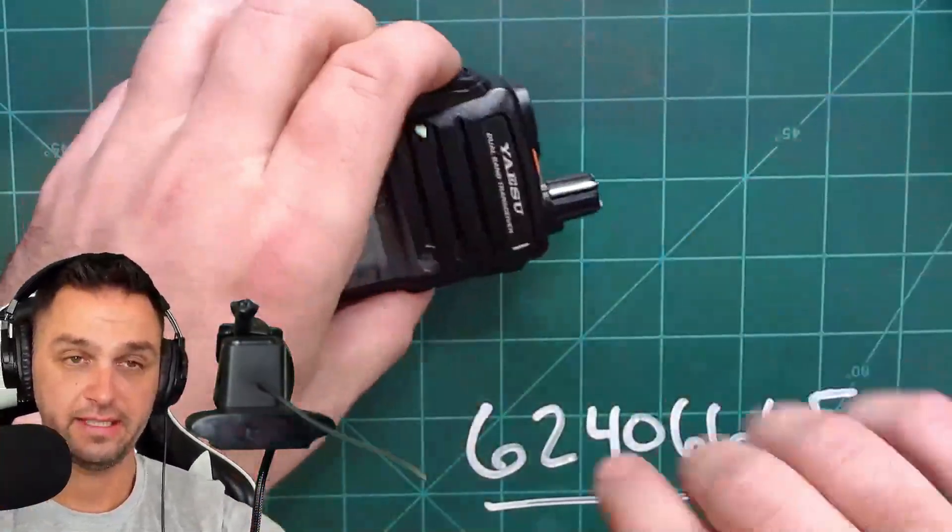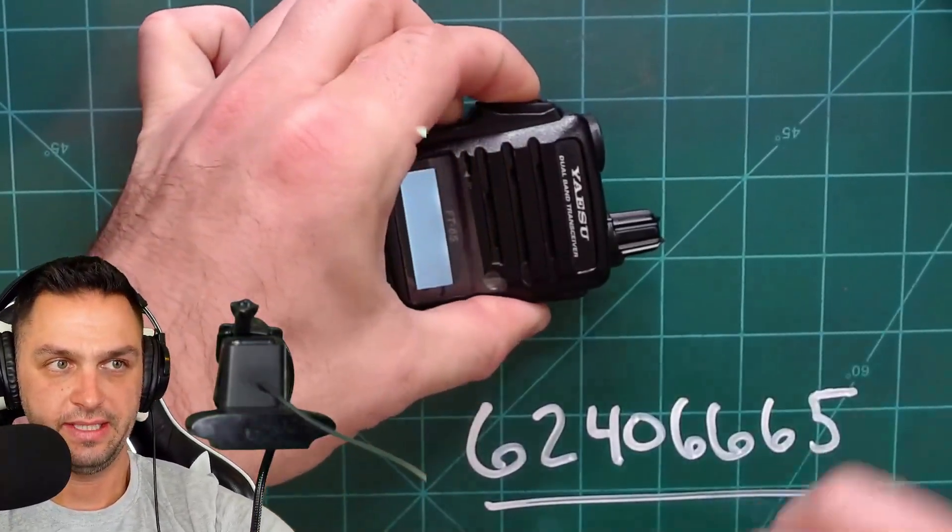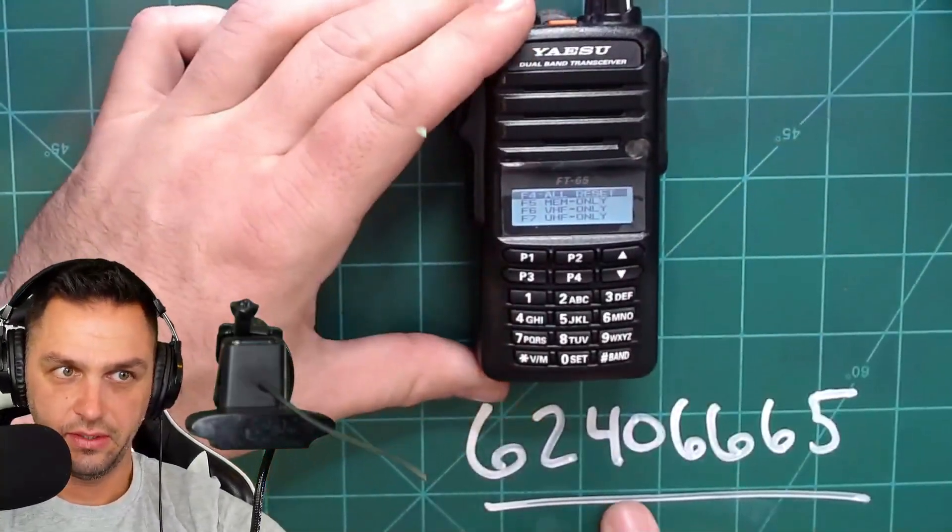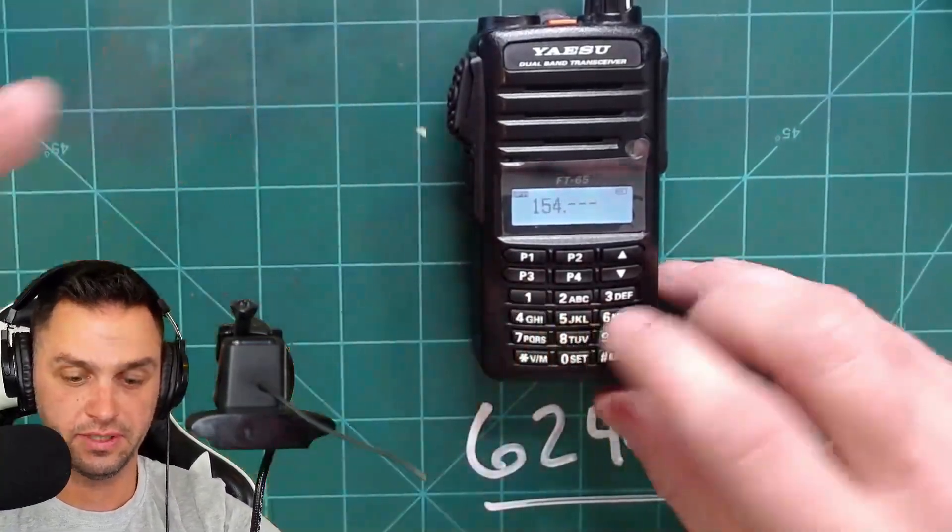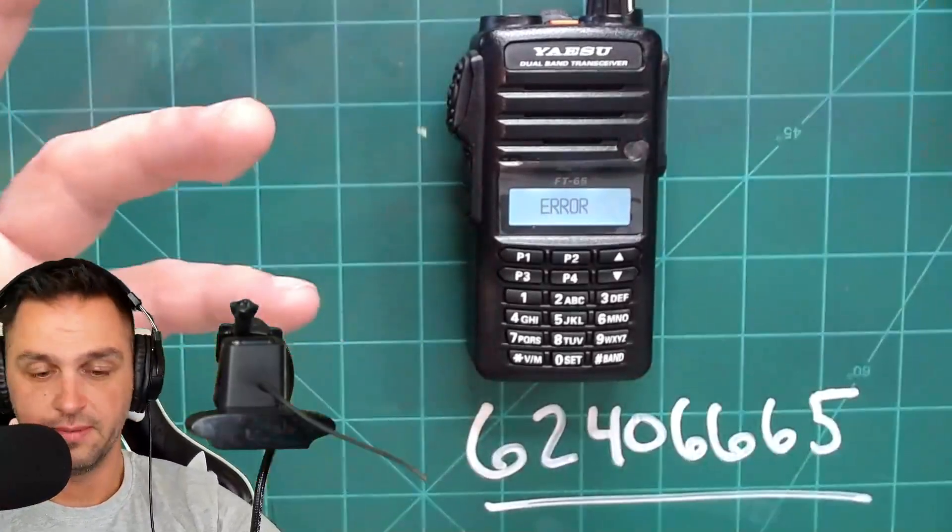Now, if you wanted to revert back to not being able to transmit out of band, you just turn the radio on the same way you did initially by holding down these two buttons, letting go, and typing in this code one more time. And then you should be able to go to other frequencies. For example, we'll just use this public safety one, and you won't be able to transmit.